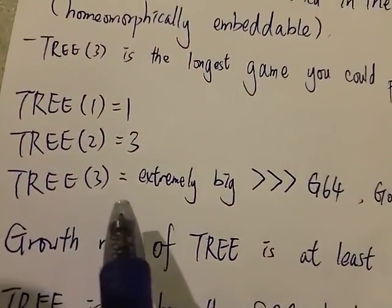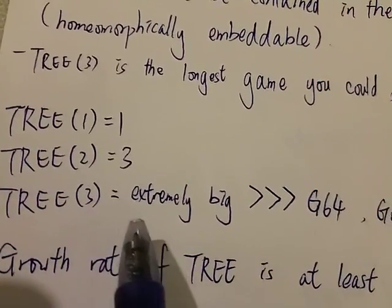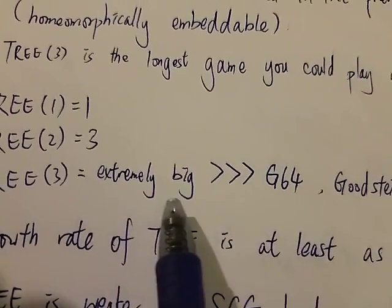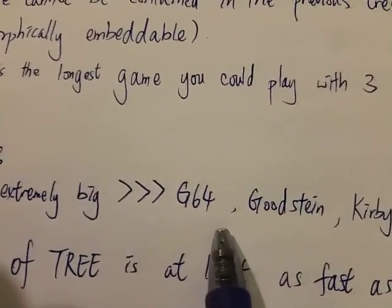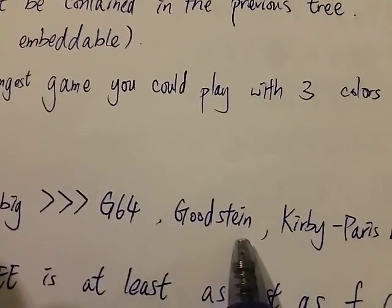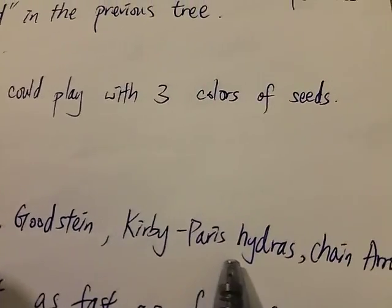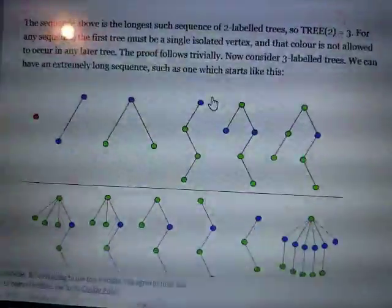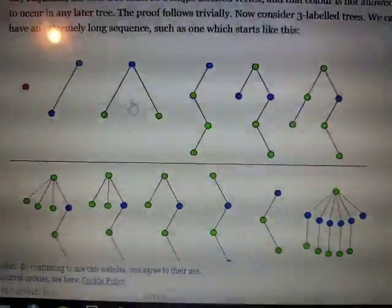For TREE(3) with three colors, the longest game you could play is TREE(3) and TREE(3) is a very, very, very big number. It's known to be much bigger than Graham's number G64. It could be represented using the Goodstein sequence or the Kirby-Paris hydra, or even the powerful chain arrow notation.